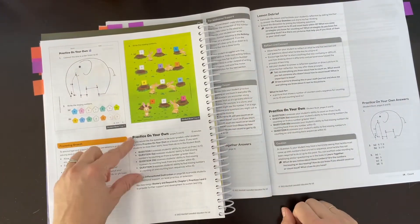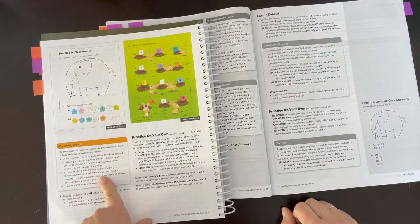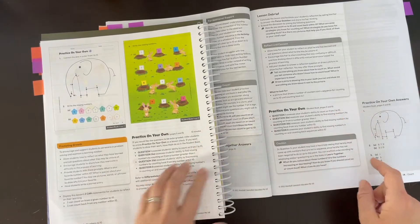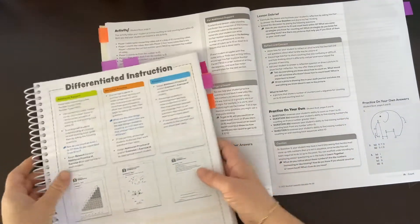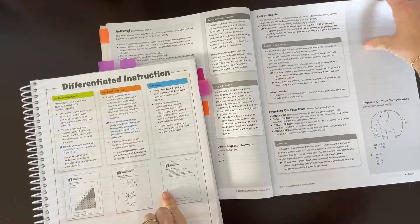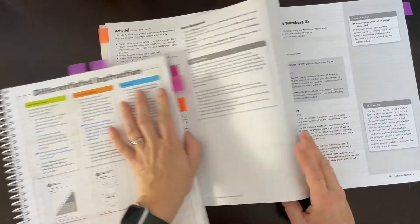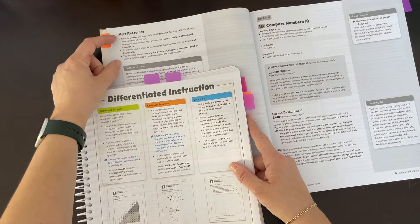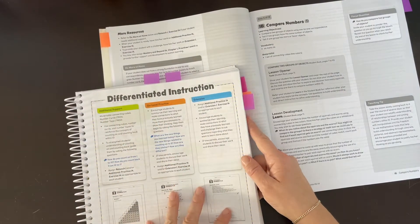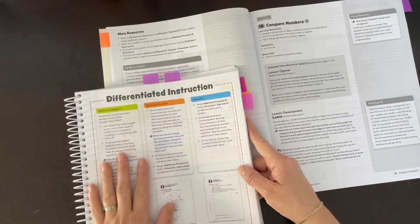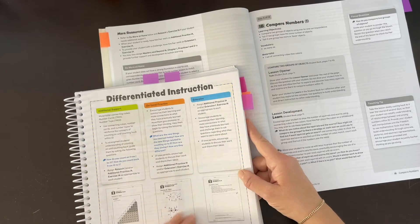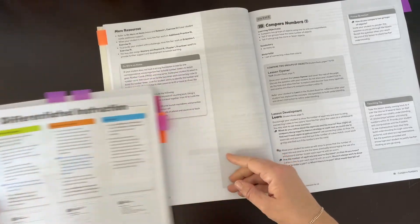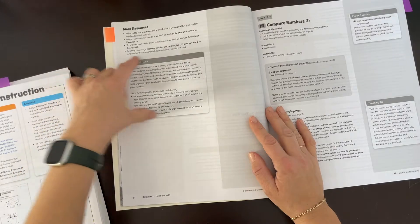We have the promoting growth box here in the teacher guide, which I like. Then we have the practice on your own section. The teacher guide has this big differentiated instruction section, which is really simplified in the home instructor's guide with the more resources section. This differentiated instruction is really important for a classroom, maybe not as much for a homeschooling parent. The home instructor's guide has this nice do more at home part.